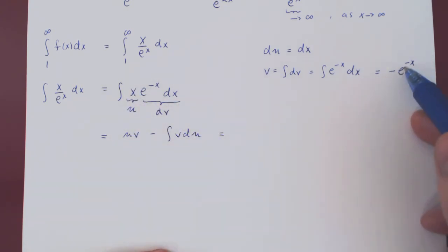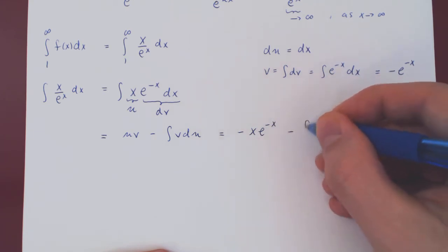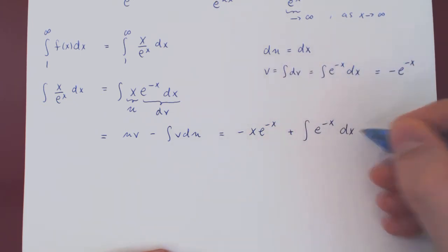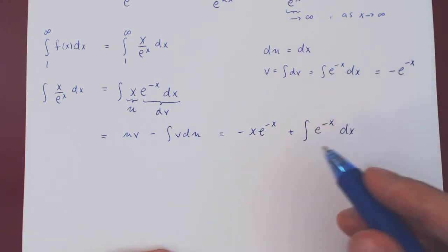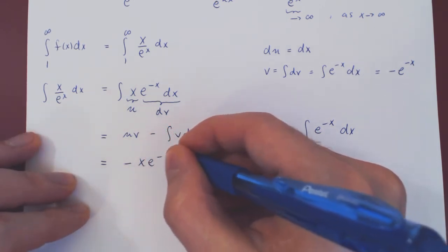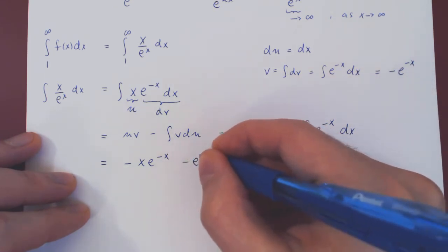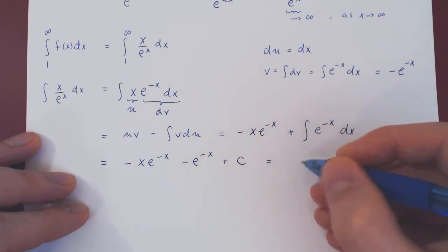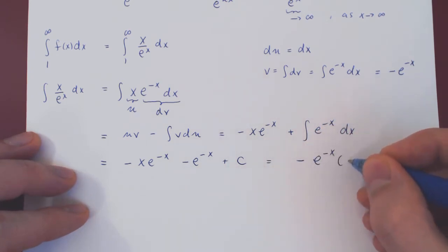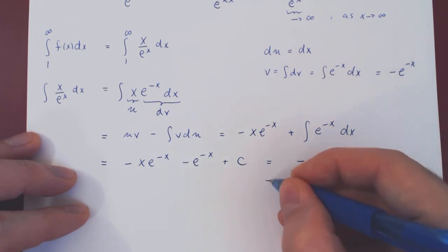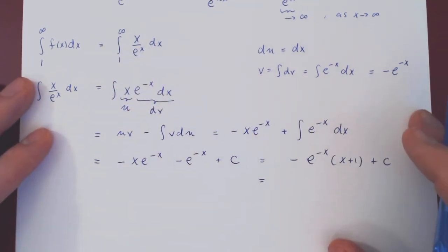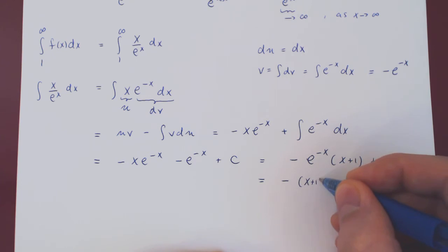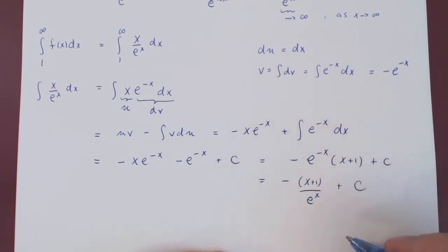So u is x and v is negative e to the negative x, giving us negative x e to the negative x, minus the integral of v du, which is plus e to the negative x dx. That integral is negative e to the negative x, plus c. We can factor out negative e to the negative x, giving us negative e to the negative x times (x plus 1), plus c. To make the limit easier to evaluate, we rewrite this as negative (x plus 1) over e to the positive x.